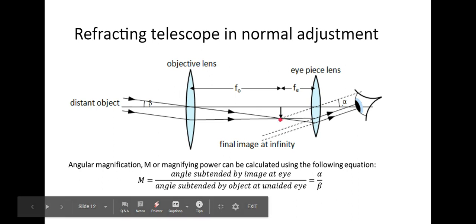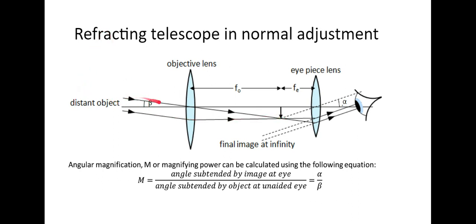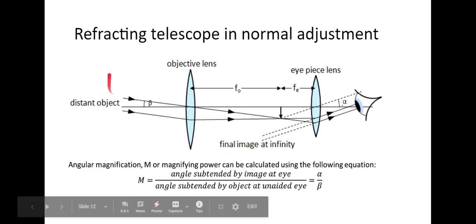Ignoring the right-hand lens, this is exactly the same as what we were drawing earlier. We've got our object over here, rays coming straight through the middle and ending up over here, and then another ray coming through hits it and goes horizontally. The point where they meet is the image. Because the rays of light are coming from infinity, they are parallel, so the image will be formed at the focal length of the objective lens - fo.